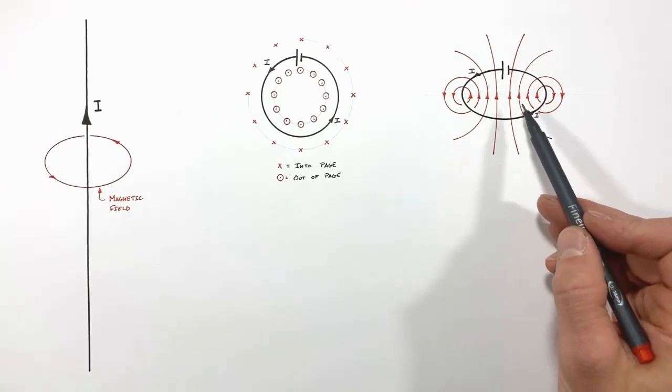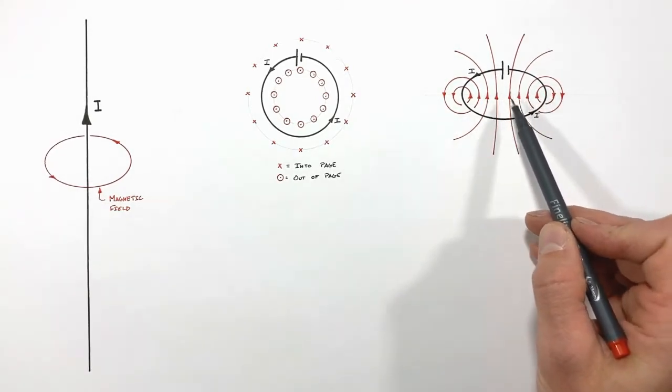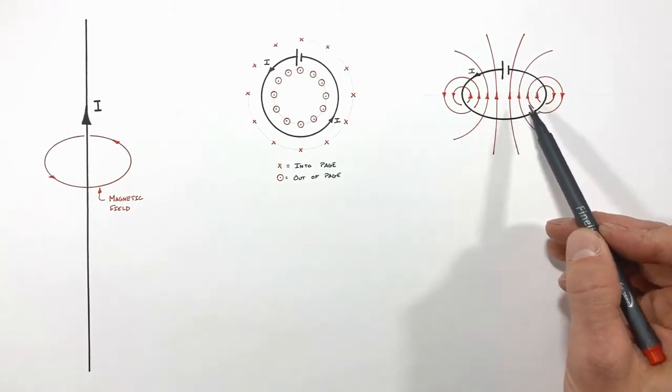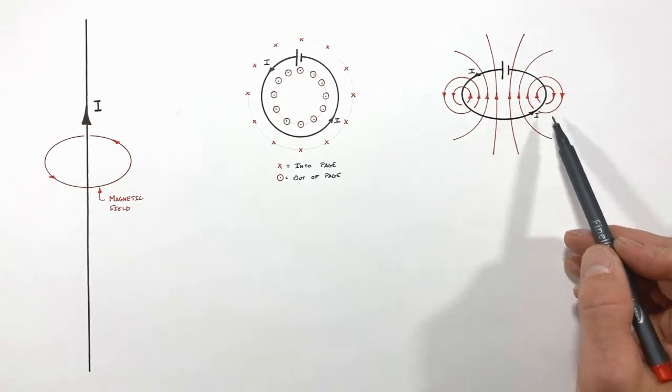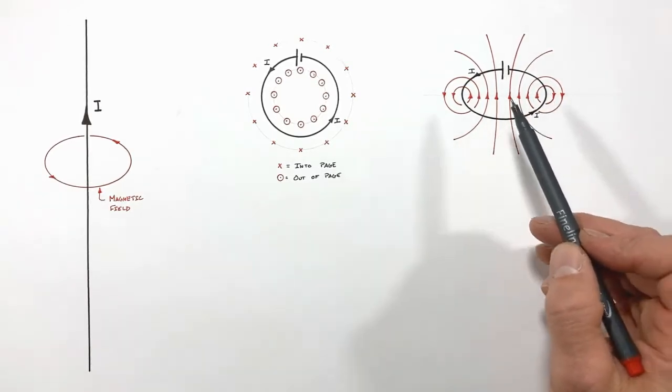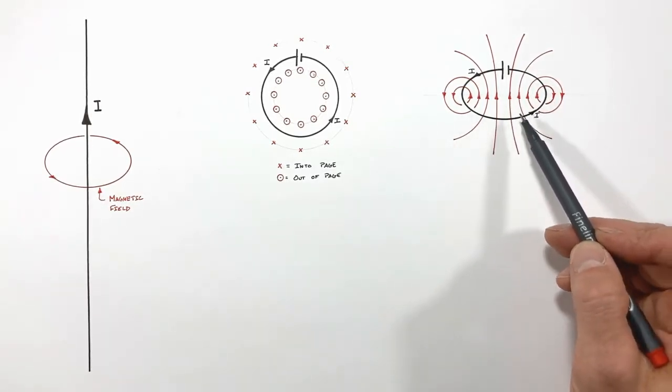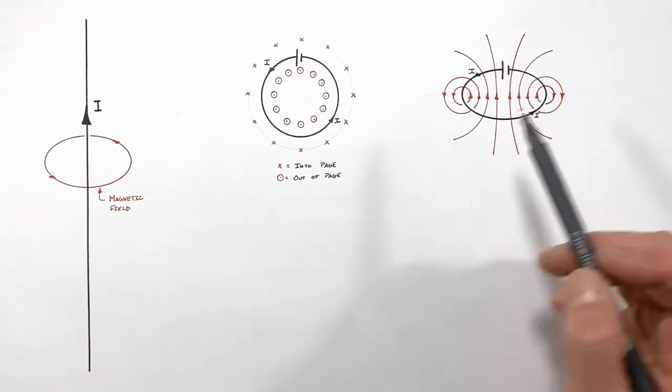Just like with gravitational field lines or electric field lines, when the magnetic field lines are close together that means the magnetic field is strong. Essentially, by coiling up a current-carrying wire we can produce a strong magnetic field. Really, all we've done is we've made an electromagnet.